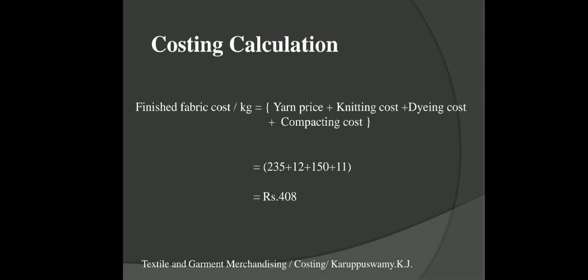Note that if you are using a contrast color, you should work out that color cost separately. The third step is to find the fabric cost per kg. The formula is: yarn price + knitting cost + dyeing cost (which includes bleaching, washing, and dyeing) + compacting cost. If there is all-over printing, include it here too. In our example: yarn 235 rupees + knitting 12 rupees + dyeing 150 rupees + compacting 11 rupees.